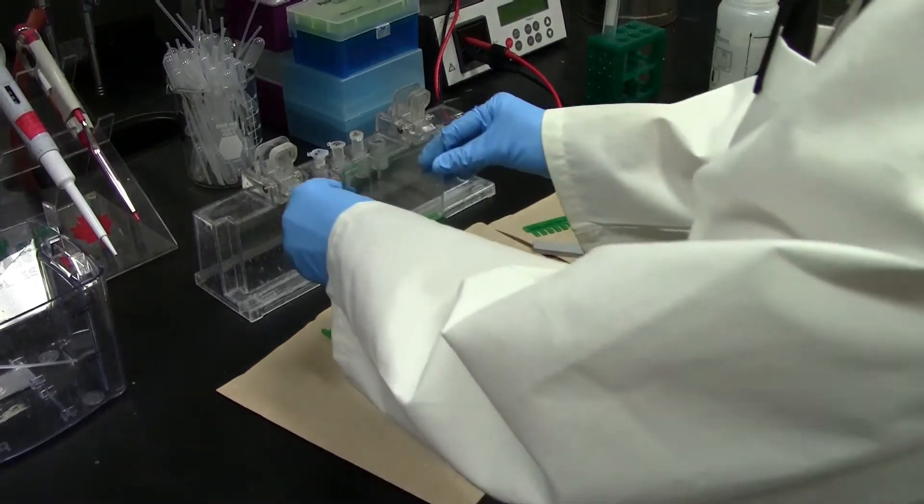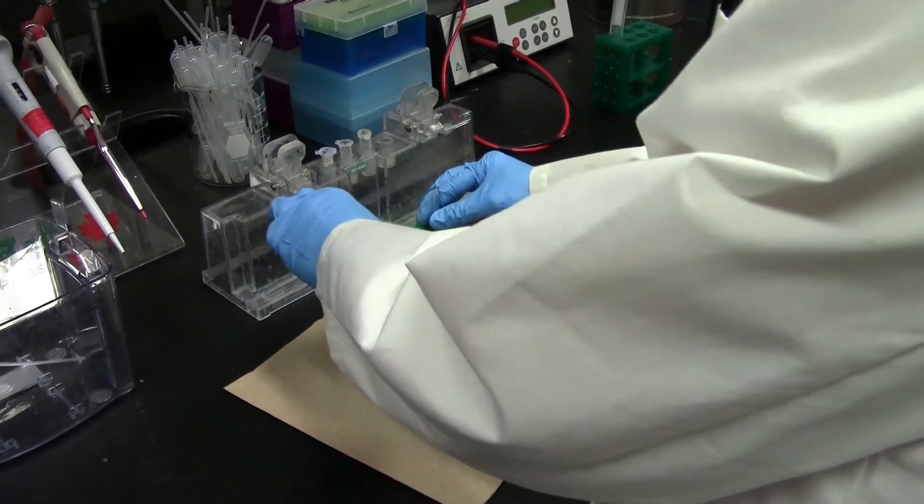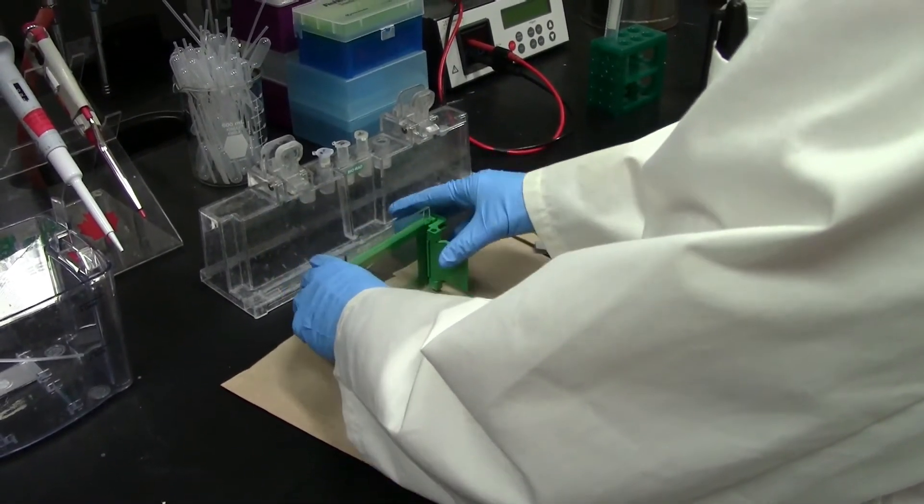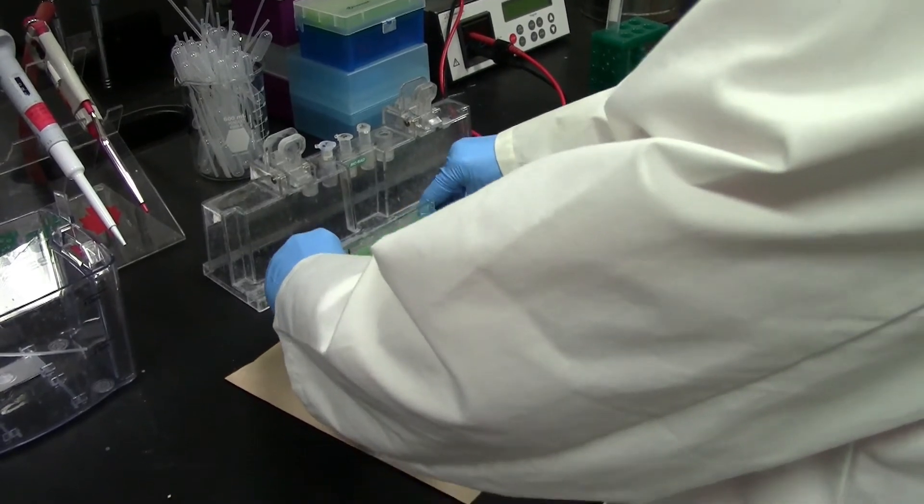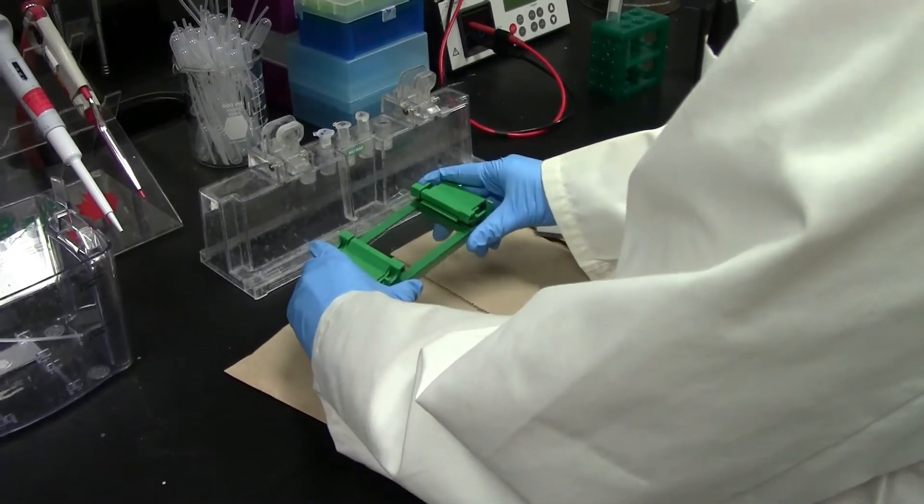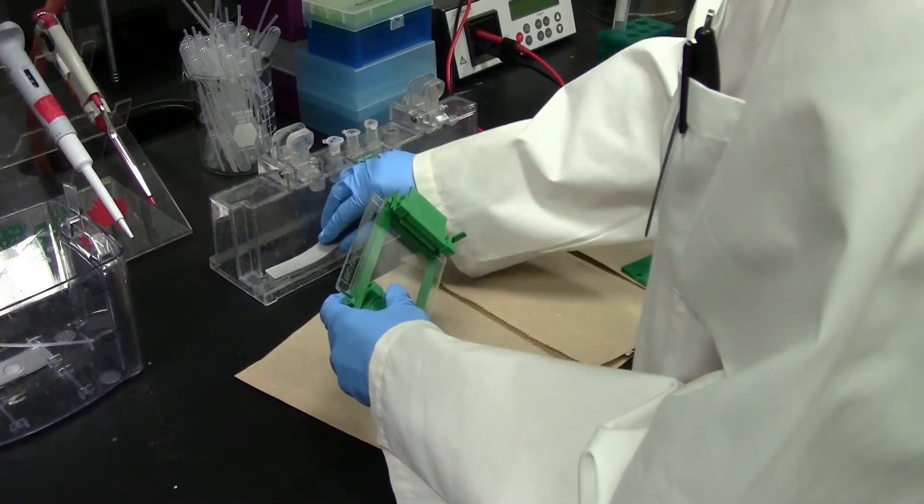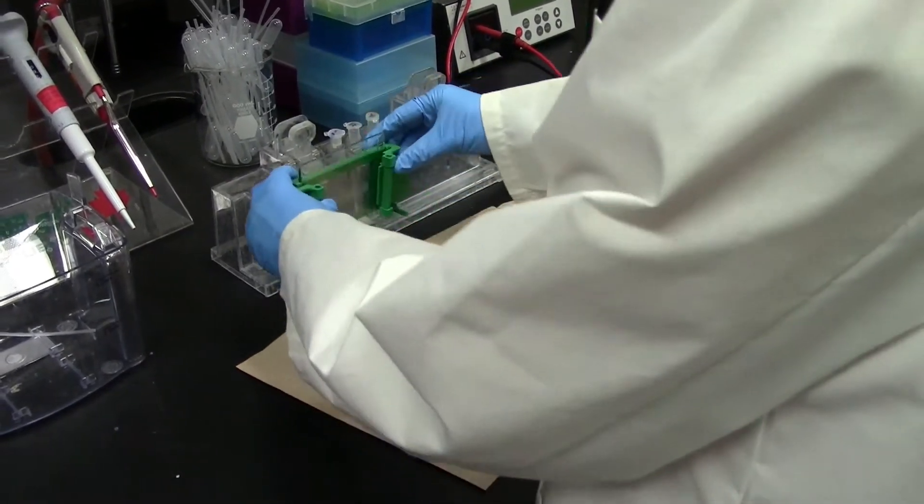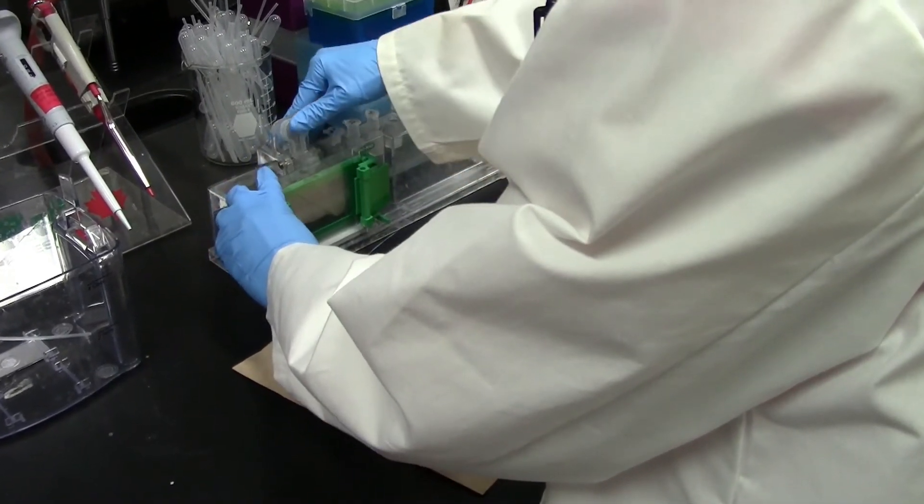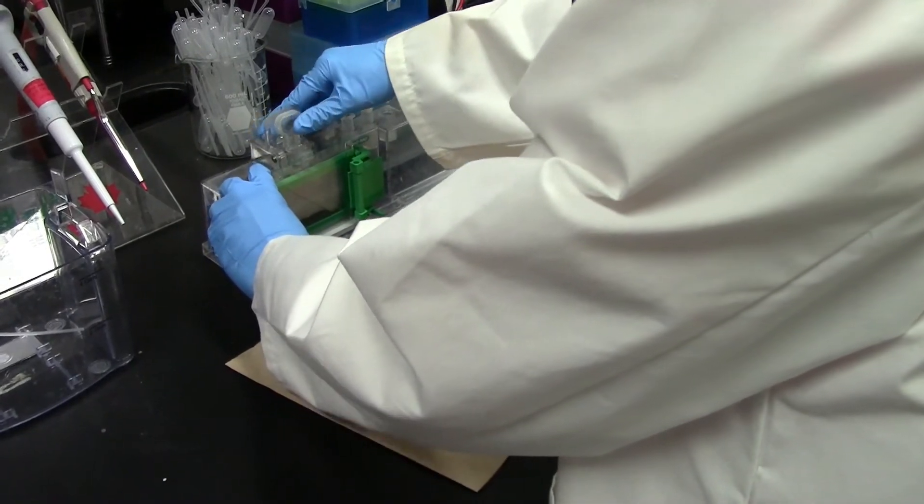To cast the gel, start by cleaning the short plate, spacer plate, and comb with ethanol. Next, assemble the plates together, place them in the casting frame, and clamp them in place, assuring that everything is flush to prevent leaks. Place a gasket on the casting stand and clamp the casting frame into the casting stand.